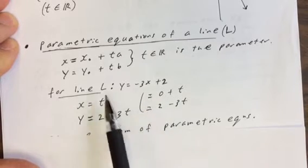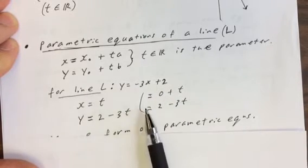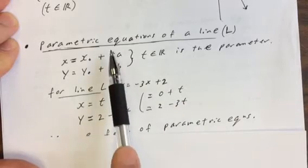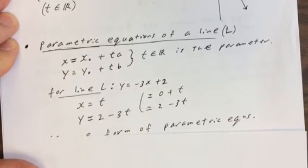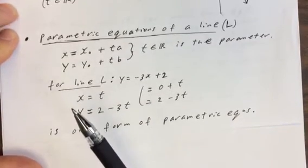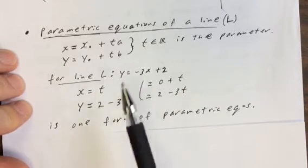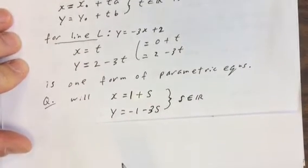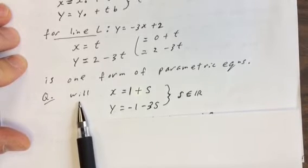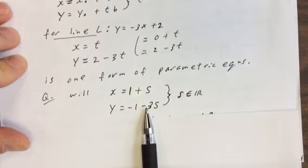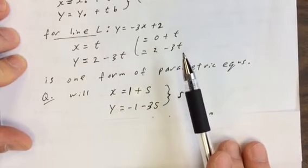We could also write it as x equals 0 plus t and y equals 2 minus 3t, so that the structure matches the general form more clearly. That's one form of the parametric equations for line L. Now here's a question: is the set x equals 1 plus s, y equals negative 1 minus 3s also the same line? You could pause the video and check before I explain.